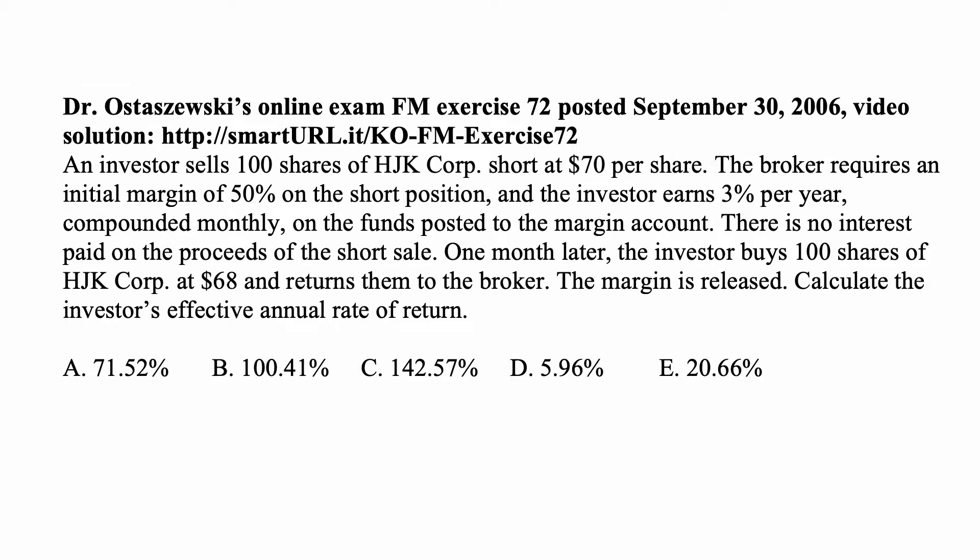One month later, the investor buys 100 shares of HJK Corporation at $68 per share and returns them to the broker. The margin is released. Calculate the investor's effective annual rate of return.